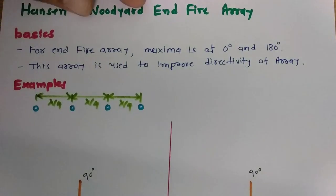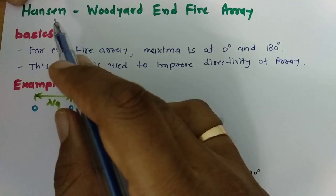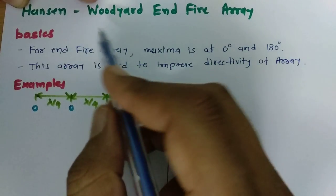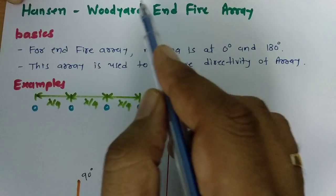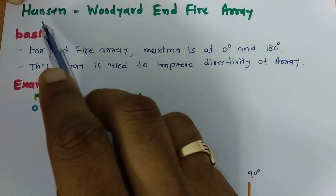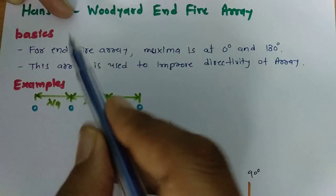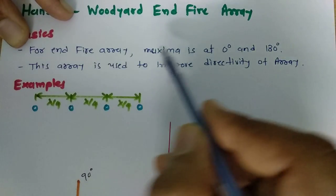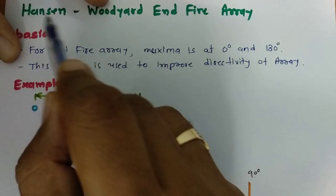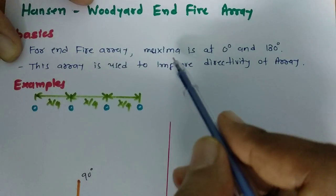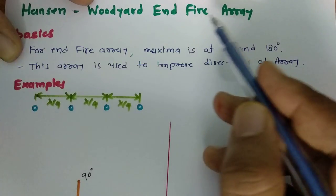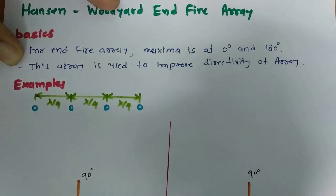Welcome to Antenna and Wave Propagation Playlist. In this session I will explain Hansen and Woodyard End Fire Array — specifically, what change is made to an array of elements to have improved directivity as provided by the Hansen and Woodyard End Fire Array. For a standard End Fire Array, maxima positions are at 0 degree and 180 degree angle. By using the Hansen and Woodyard array, one can achieve improved directivity.